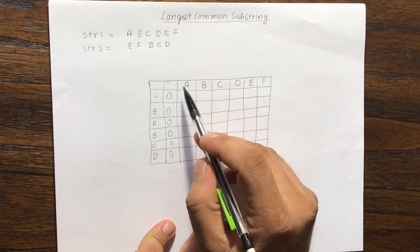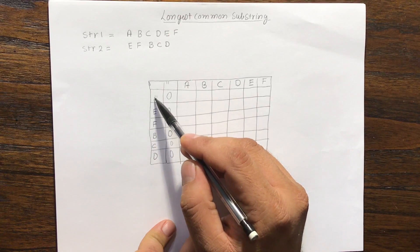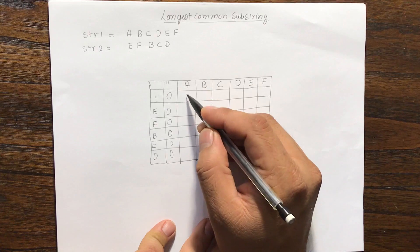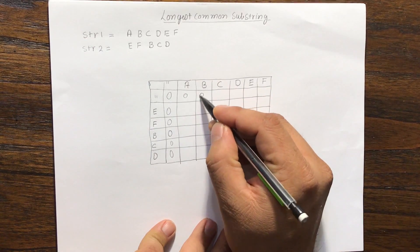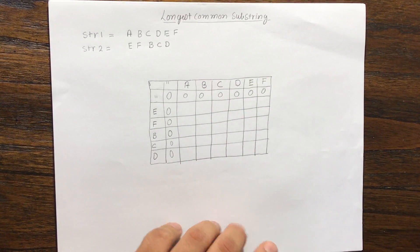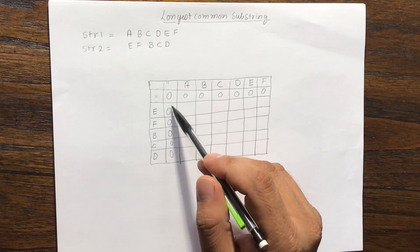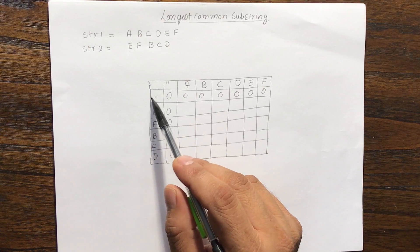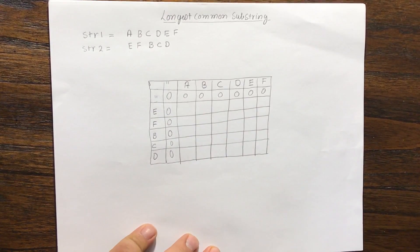Similarly, if the first string is a, b, c, d, e, f and the second string is just null, then the length of the longest common substring will always be 0. So if string 1 is null, all these values will be 0. And if the second string is null, then all these will also be 0.